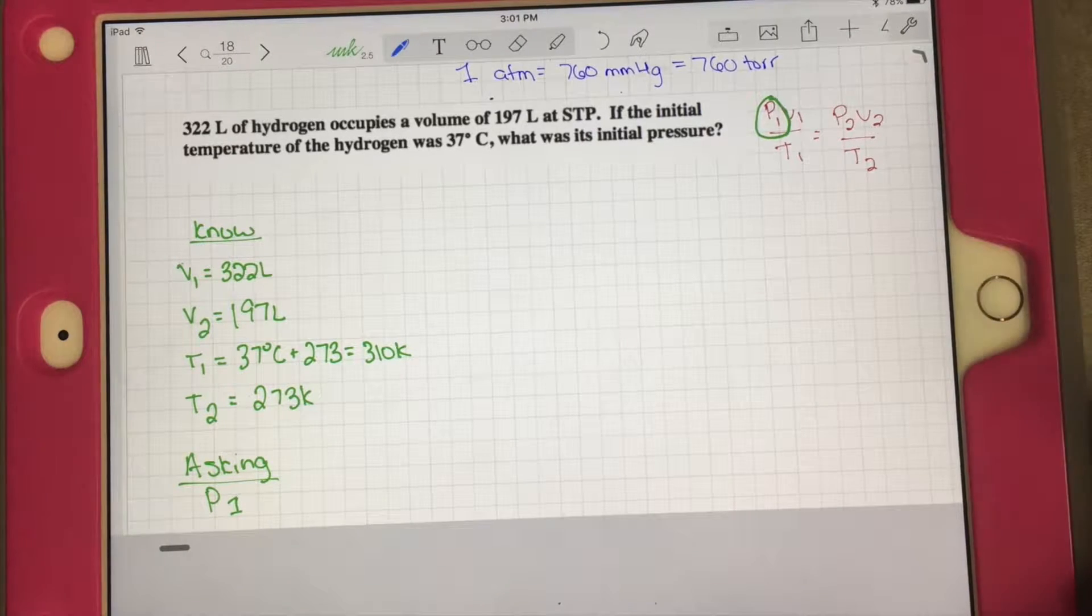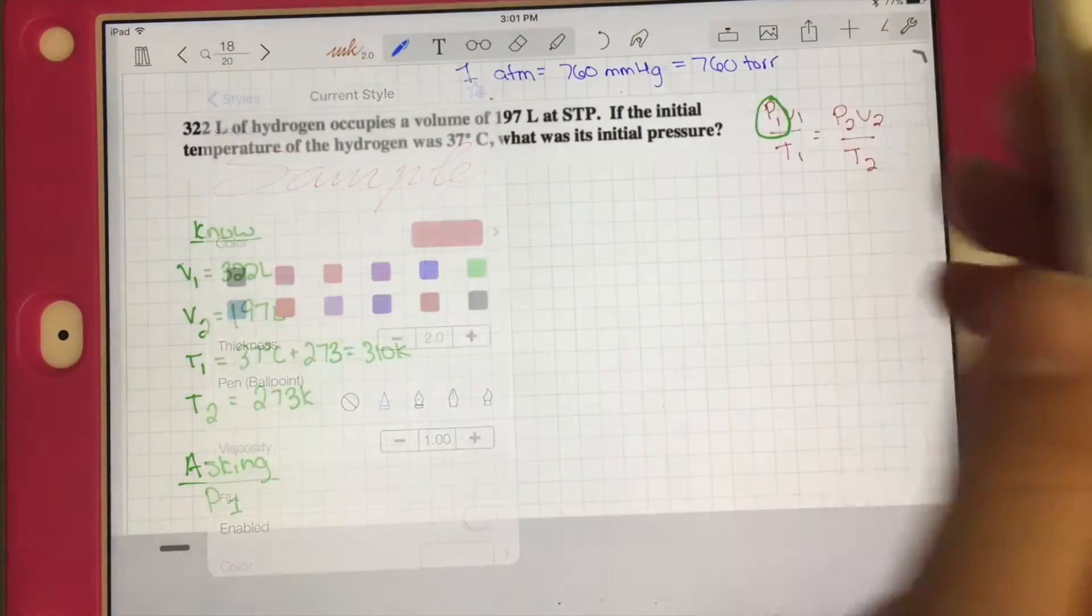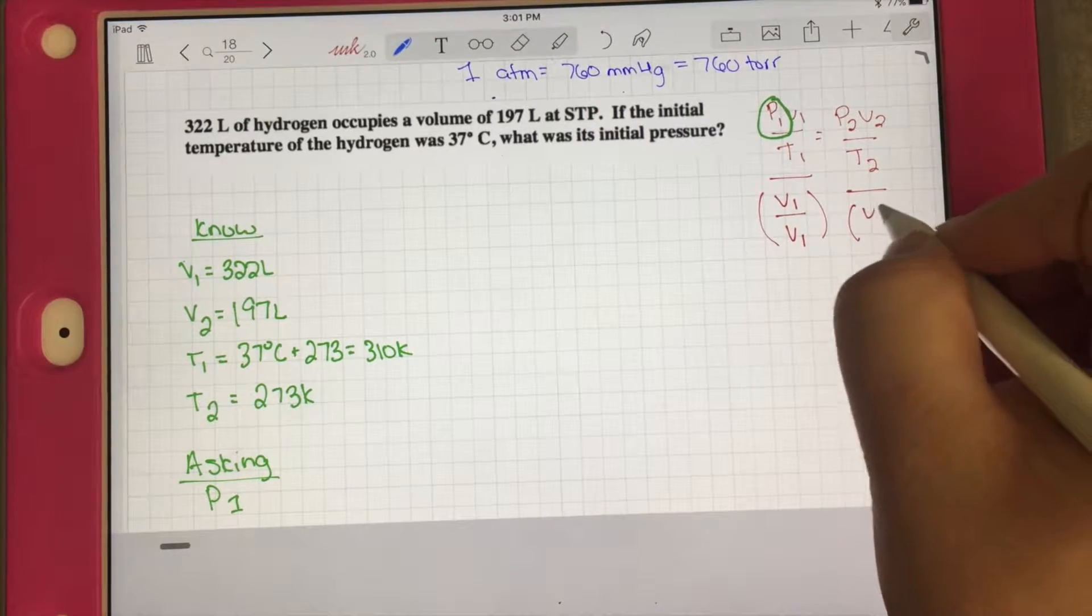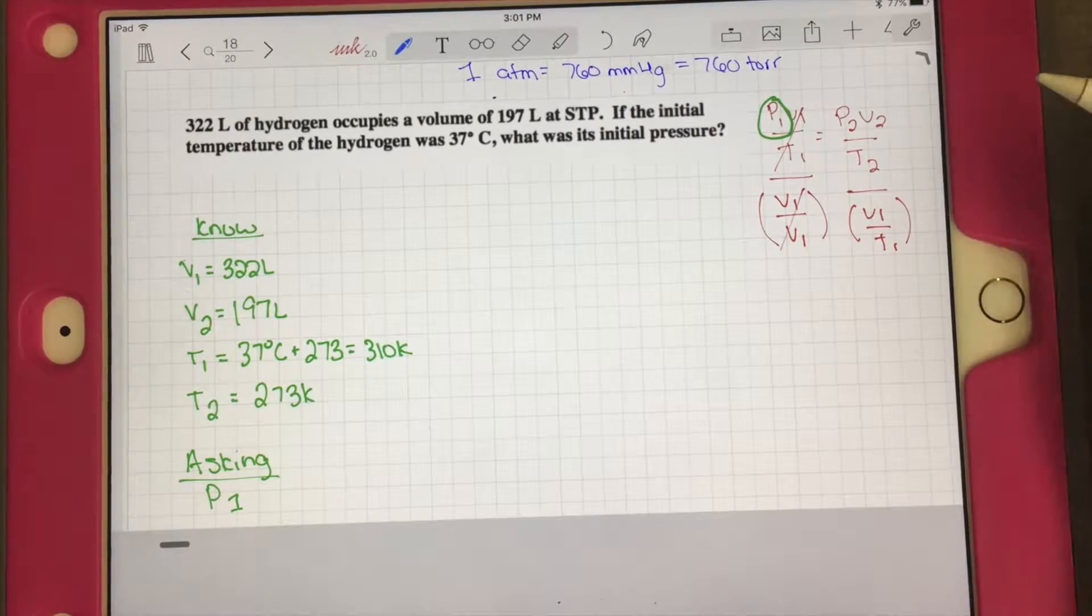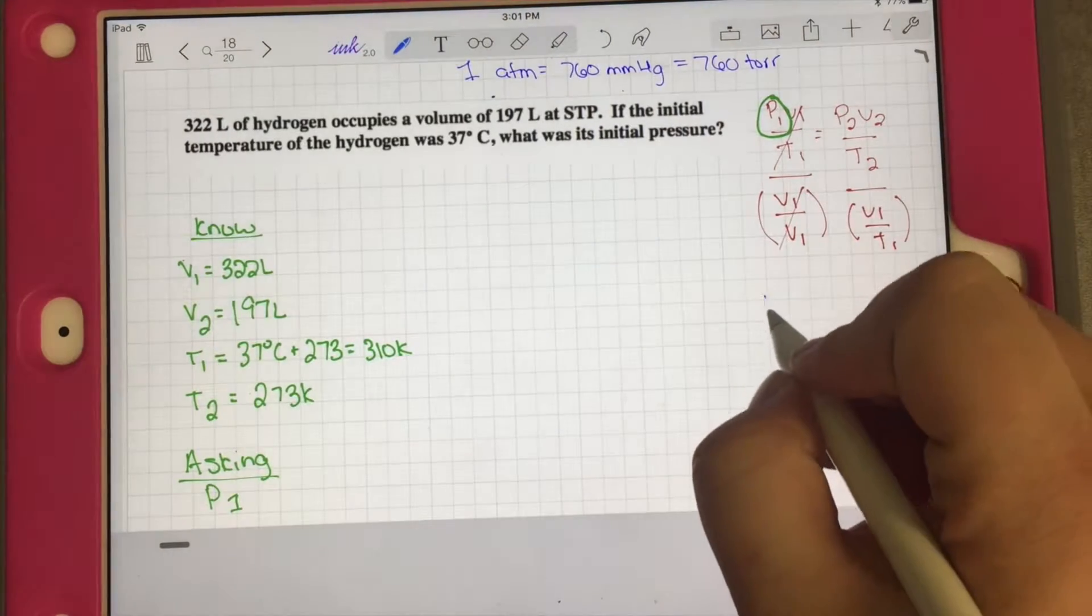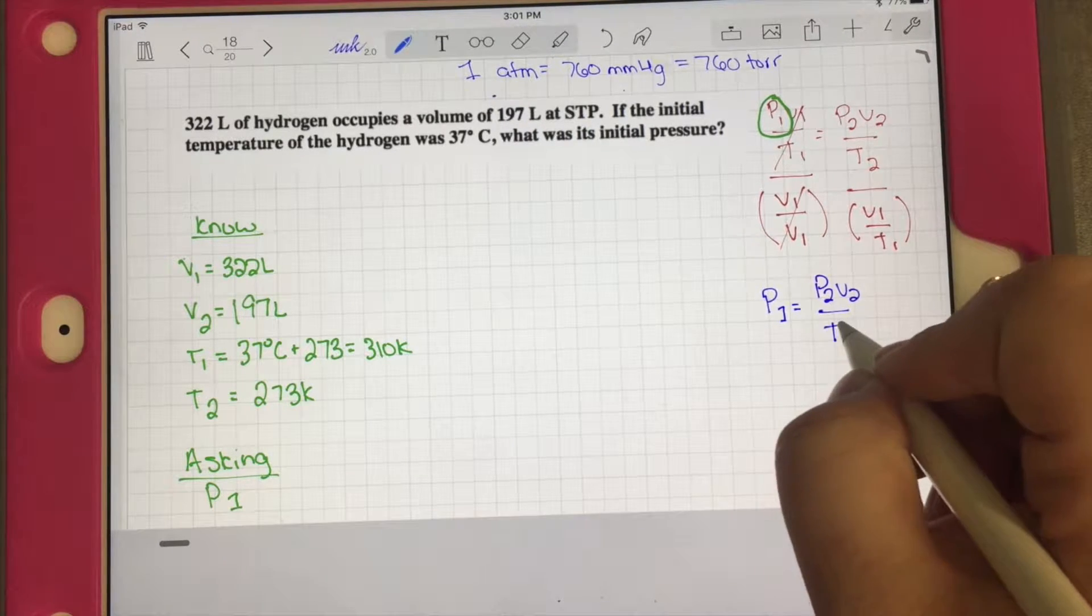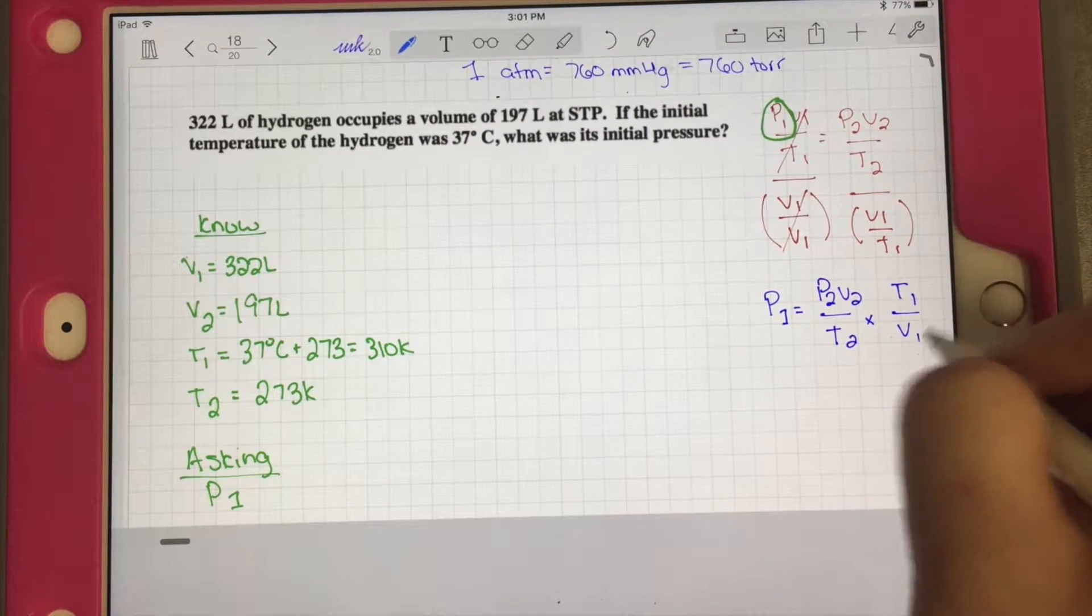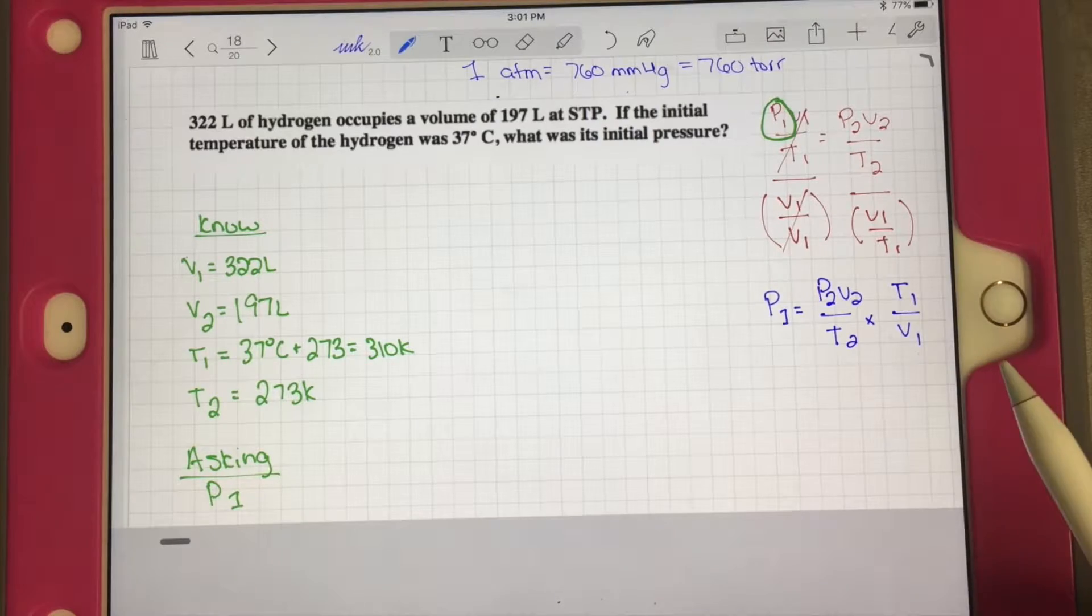We're going to have to divide by P1 over T1 to isolate it. This is going to cancel. When we divide by a fraction, we really multiply by the reciprocal. So P1 equals P2 V2 over T2 times the reciprocal T1 over V1. At this point, we have everything we need to just plug everything in.